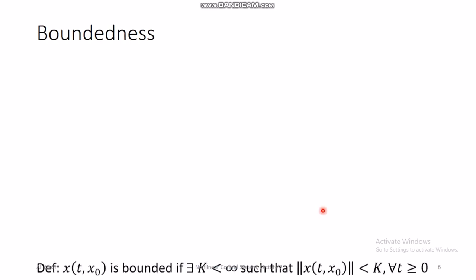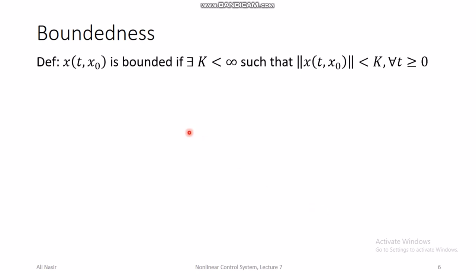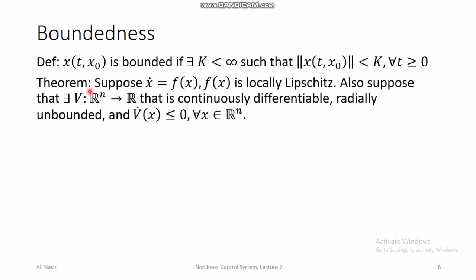Next is the concept of boundedness. A trajectory x(t, x₀) is bounded if there exists some finite constant k such that the magnitude of the trajectory is less than k for all time. This is a simple and straightforward definition. There is also a theorem: suppose x̄ = f(x) where f(x) is locally Lipschitz, and suppose there exists a Lyapunov function V that is continuously differentiable, radially unbounded, and V̇ ≤ 0.